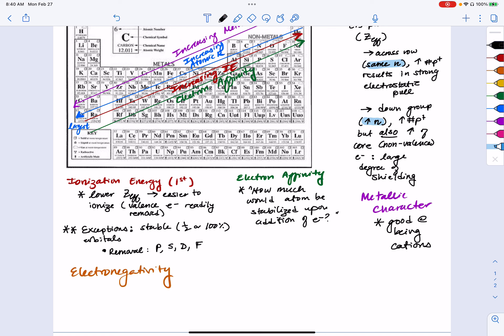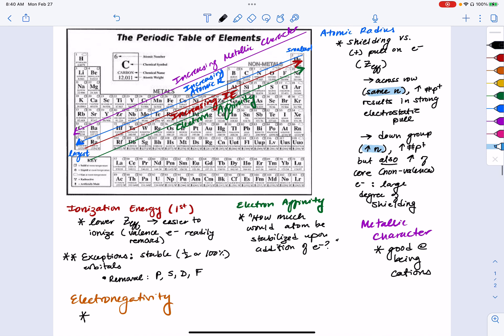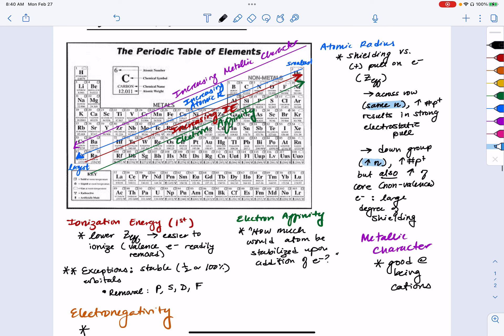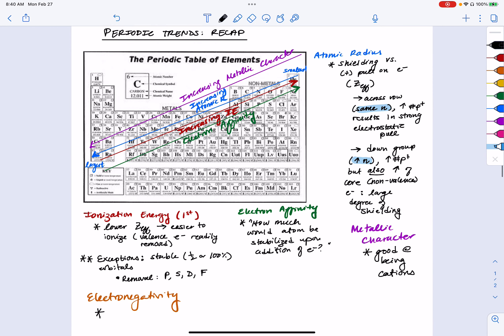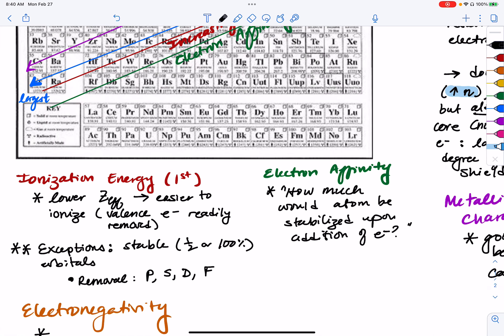Now the last trend that was discussed is this idea of electronegativity and a thing to keep in mind about electronegativity is it's kind of similar to this idea of effective nuclear charge, but it's not something that relates to what an atom is on its own. Electronegativity has context that doesn't exist in a vacuum.